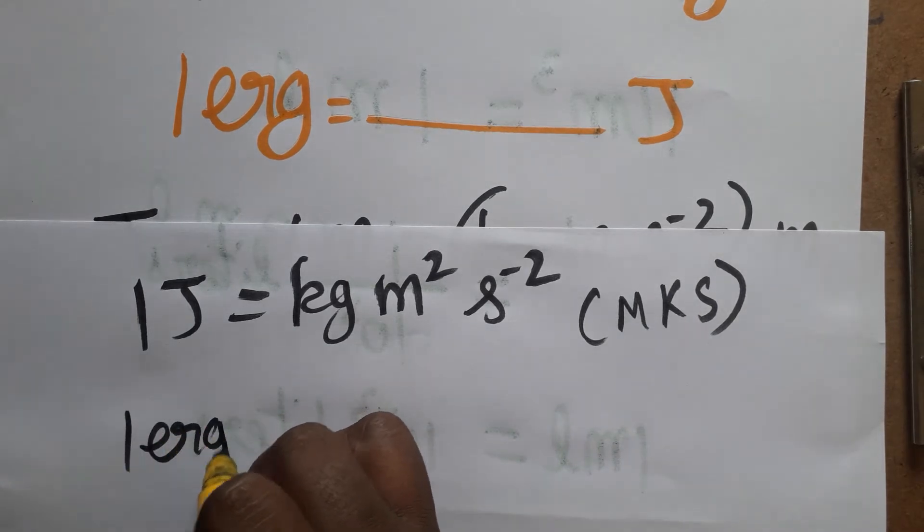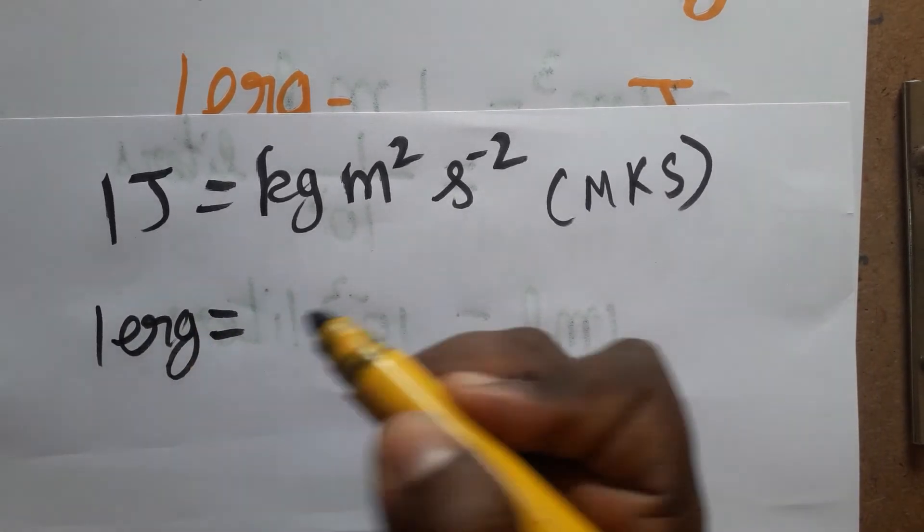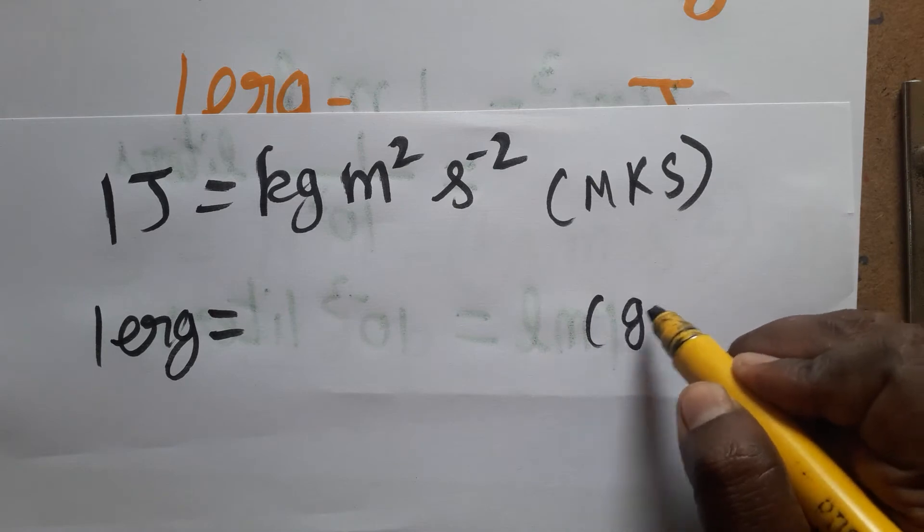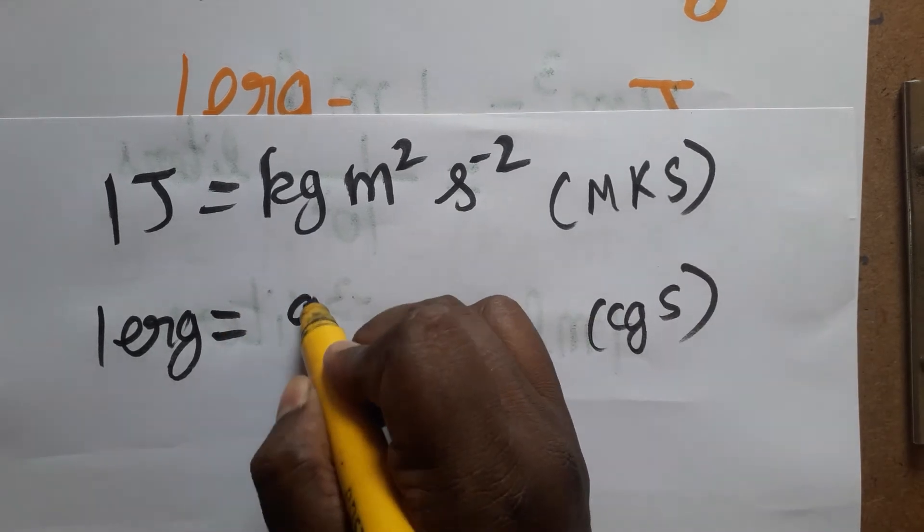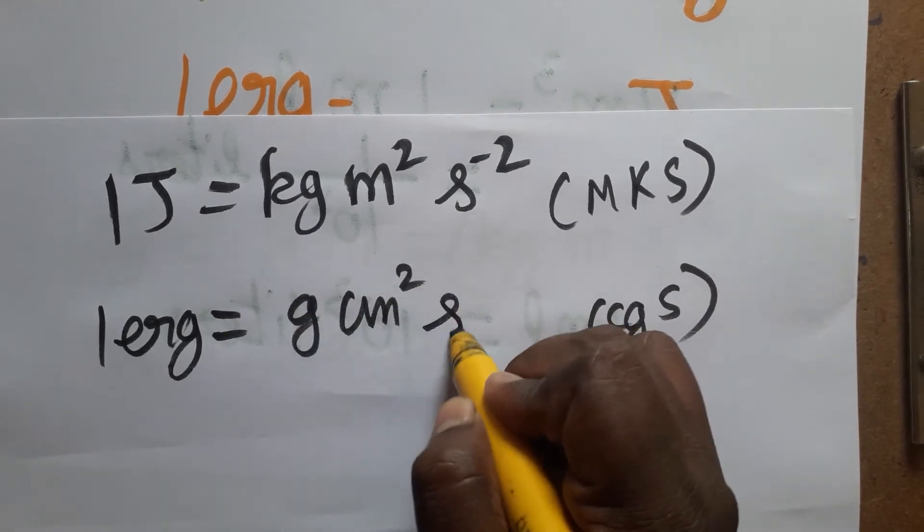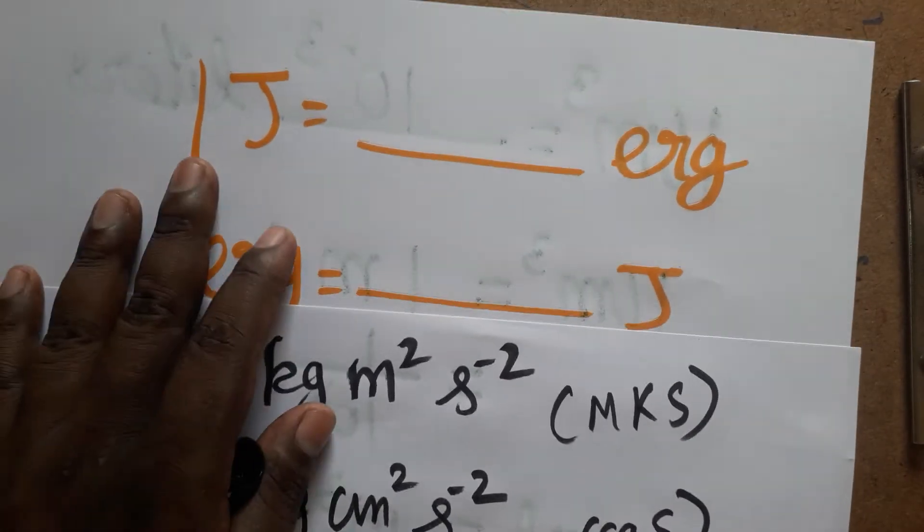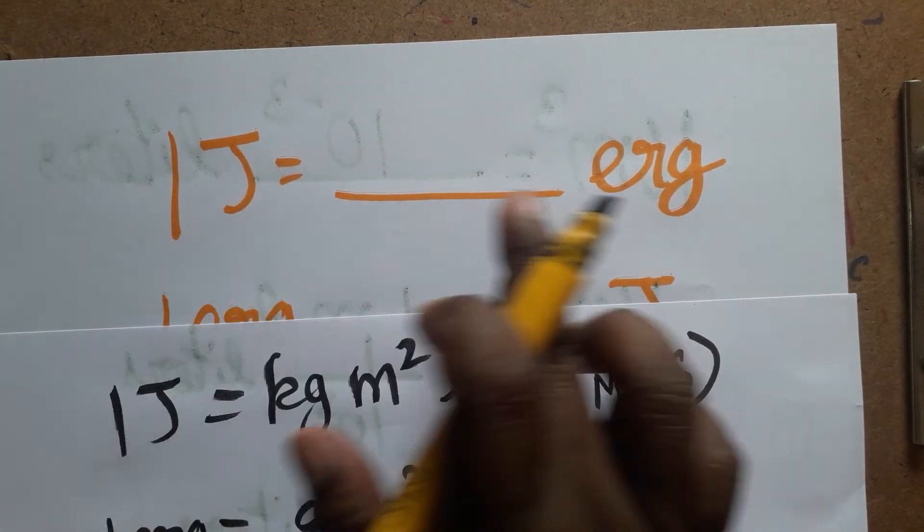Now erg. Erg is a unit of the CGS system - centimeter gram second. It follows the CGS system. So gram centimeter square second minus 2, it is an erg.